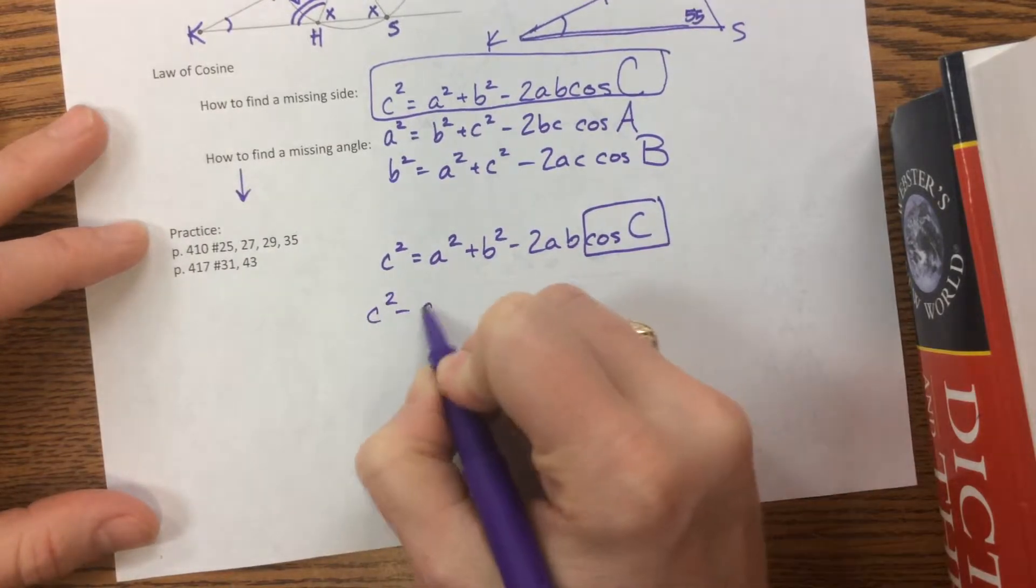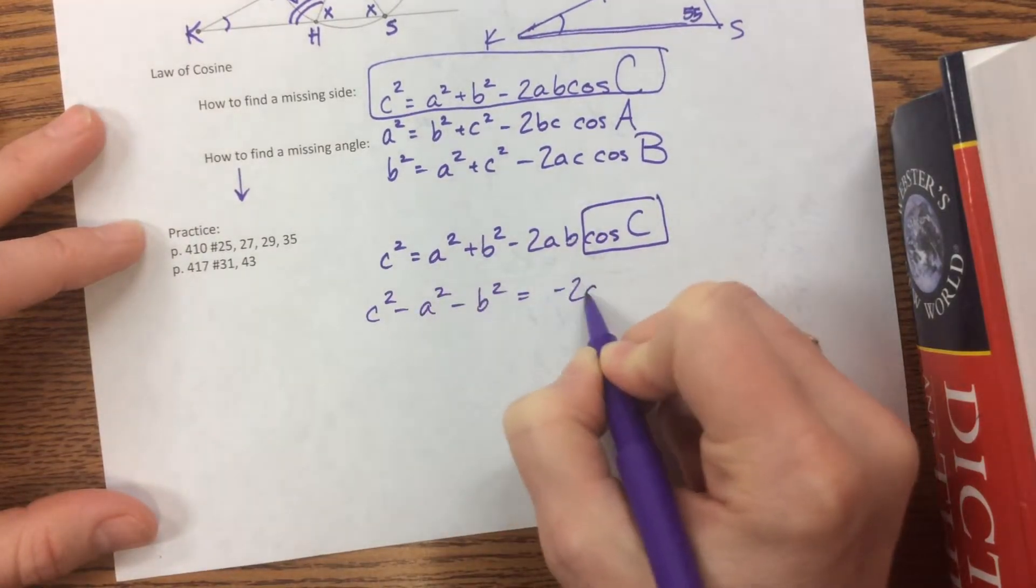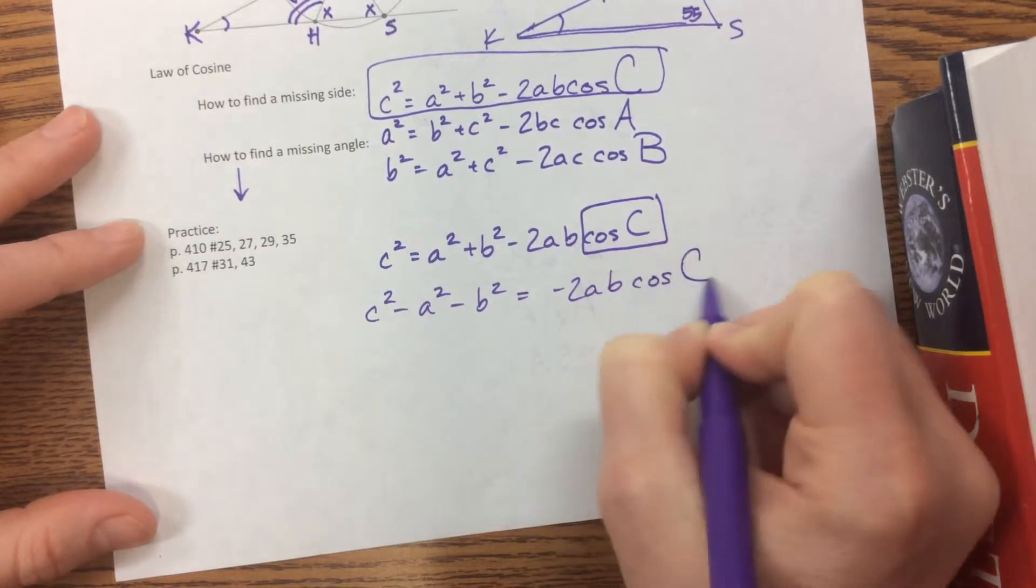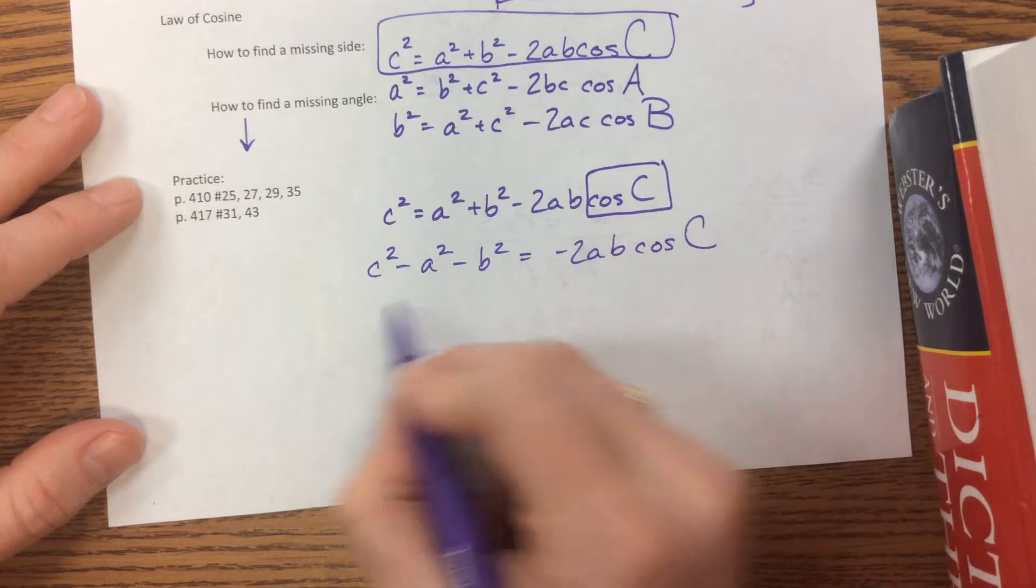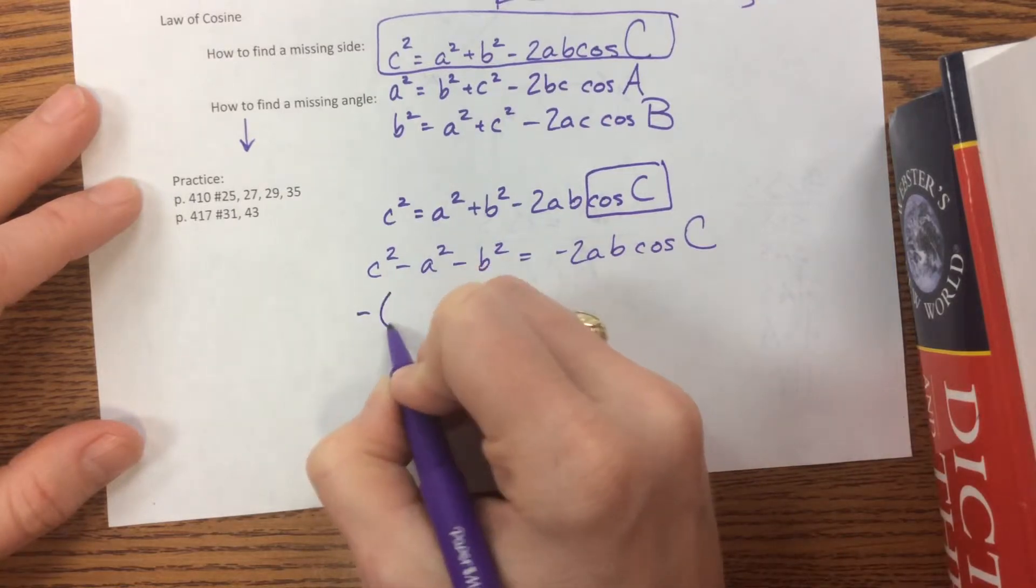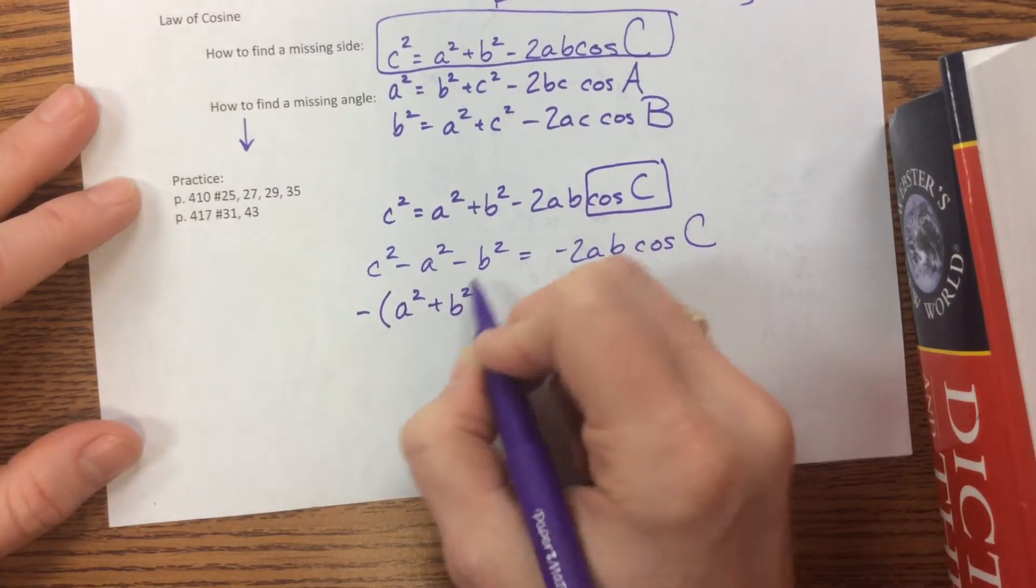And so I will manipulate this and have a second formula that I want to hang on to. So I begin by subtracting out a squared and b squared. Okay, then I'm going to divide, but before I do that, I'm going to factor out a negative, and that makes the a squared positive, the b squared positive,